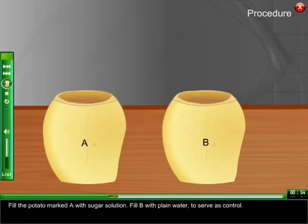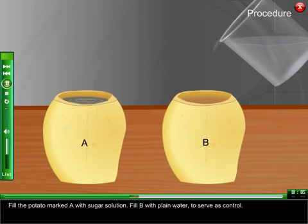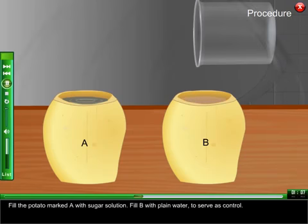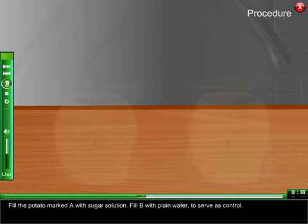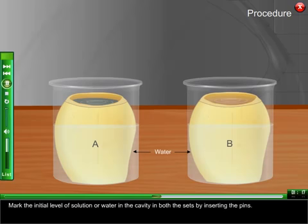Fill the potato marked A with sugar solution. Fill B with plain water to serve as control. Set each in different beakers half filled with water and mark as A and B. Mark the initial level of solution or water in the cavity in both the sets by inserting the pins.